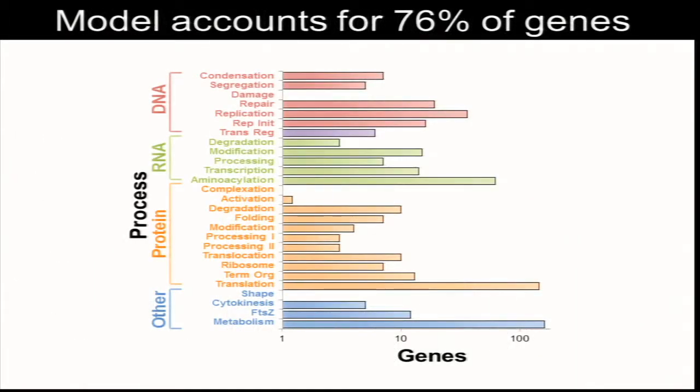What I want to emphasize is that even though we can now build models which account for every annotated protein, even the best annotated genomes, even the best experimentally characterized organisms, we can still only account for maybe as much as 75 percent of all the genes.